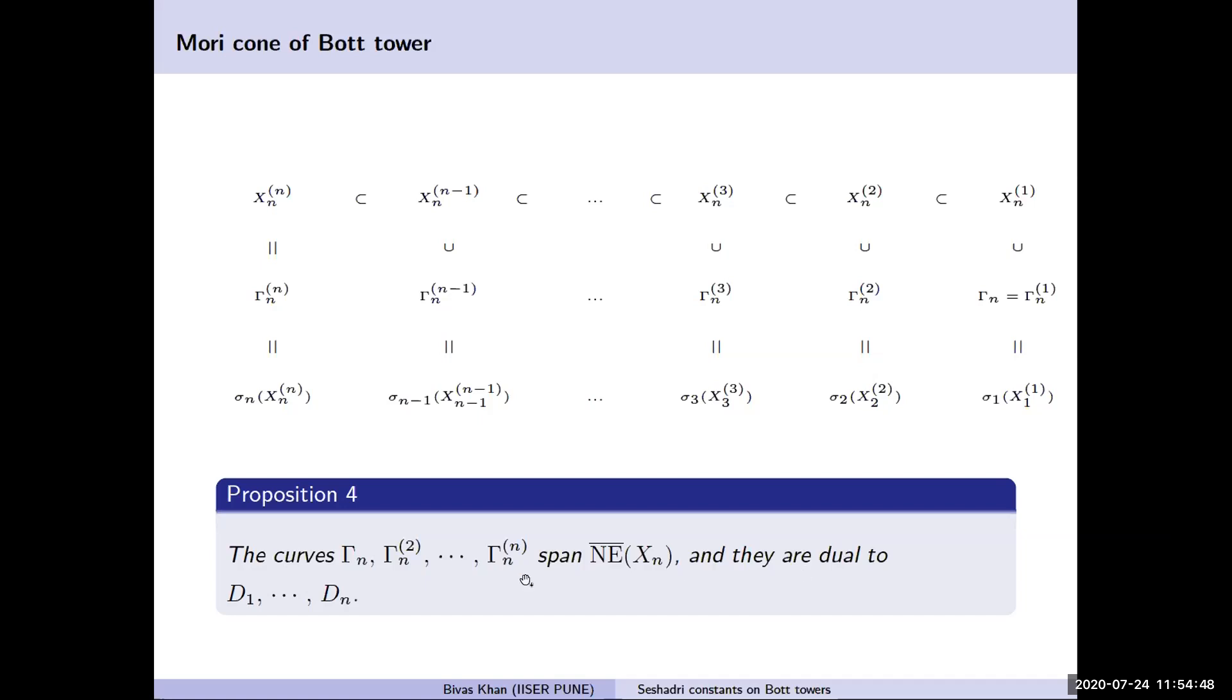It follows that these are the curves which generate the Mori cone of the Bott tower X_n. In fact, they are dual to the generators of the Picard group D_1 up to D_n.